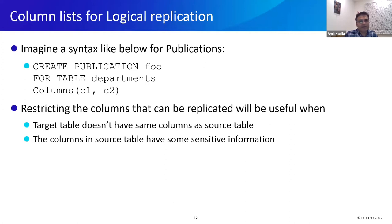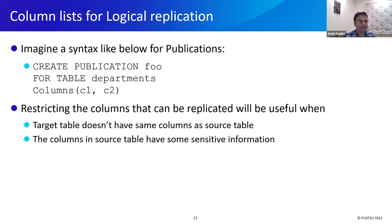Then there is another feature being developed for PostgreSQL 15 known as column lists. Users will be allowed to specify the columns they want to replicate rather than replicating the entire row. Restricting columns is useful when the target table doesn't have the same columns as the source table, and sometimes columns in the source table can have sensitive information which users might not want to replicate.